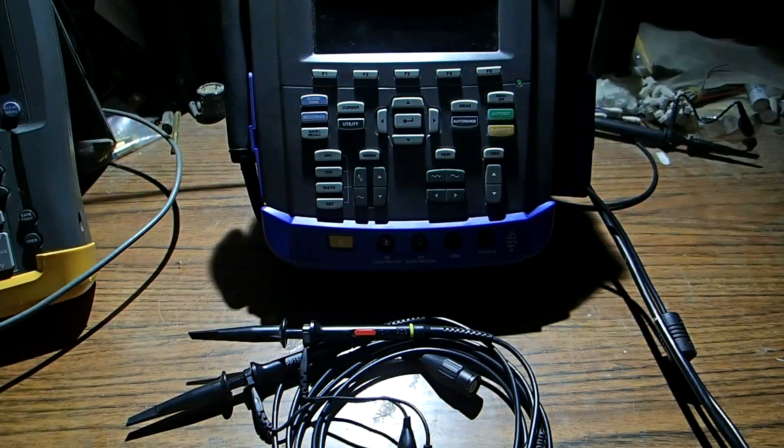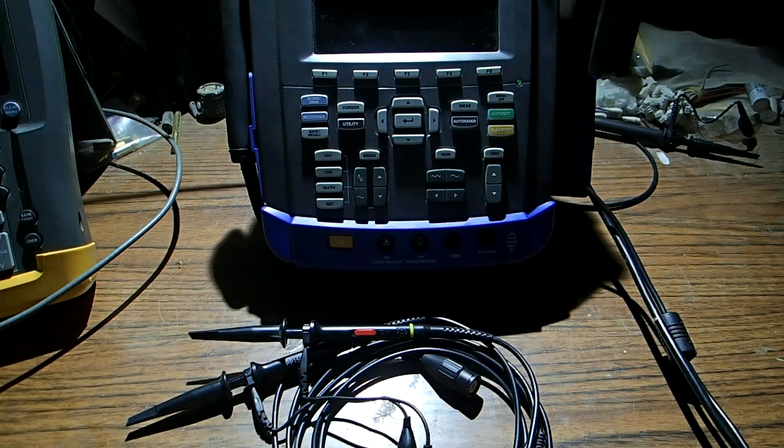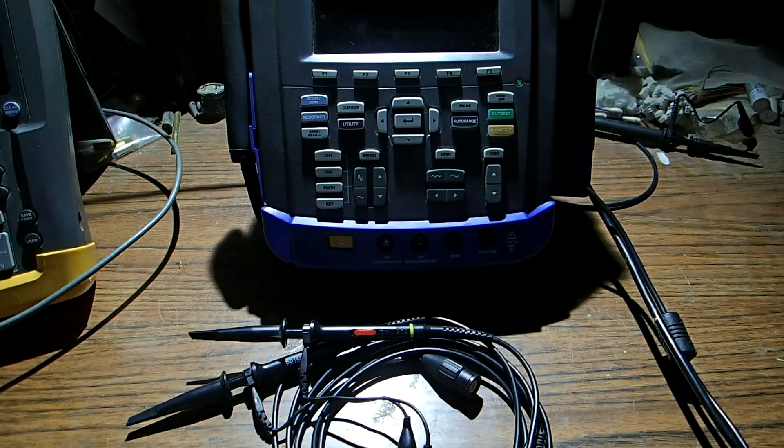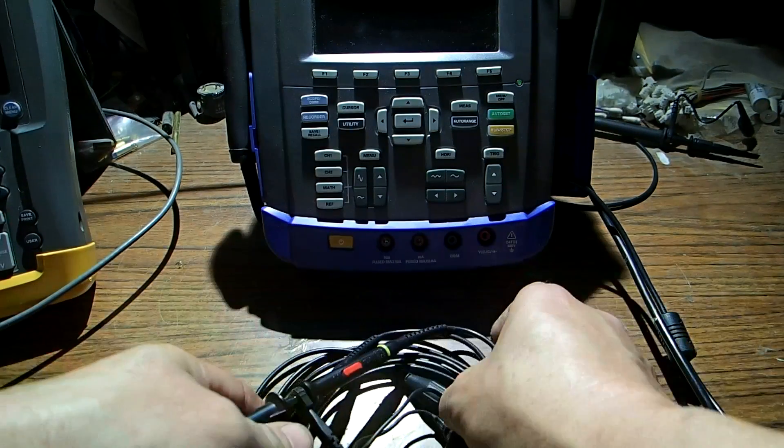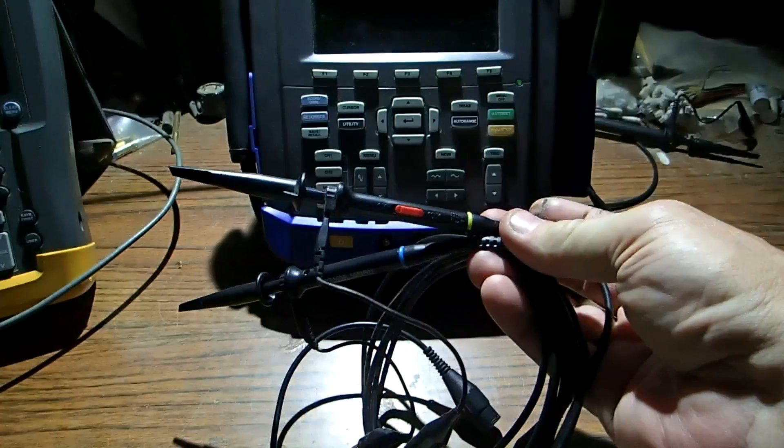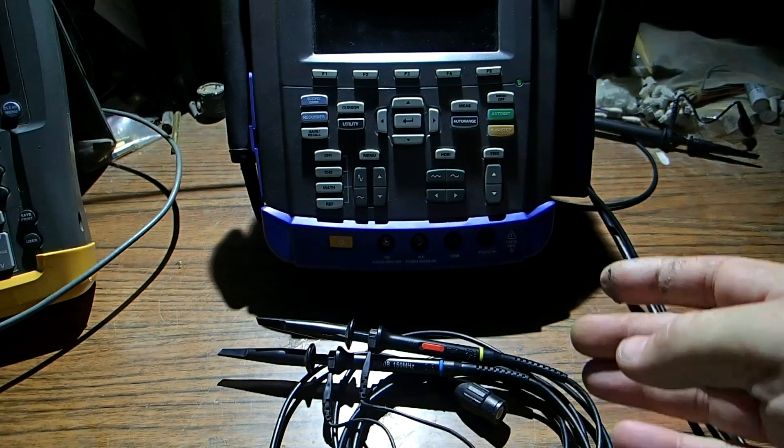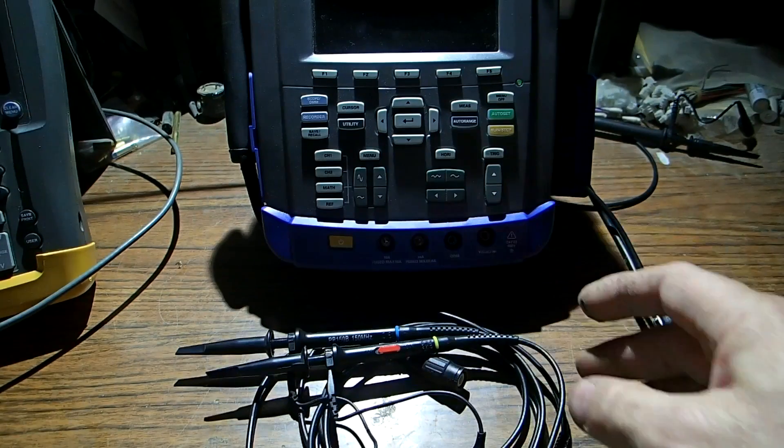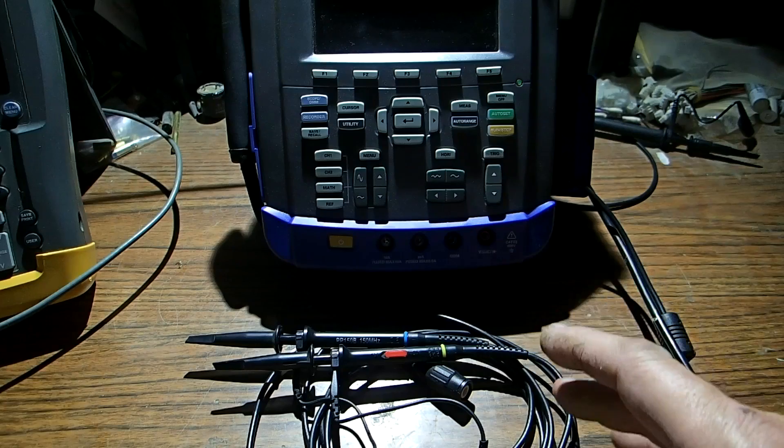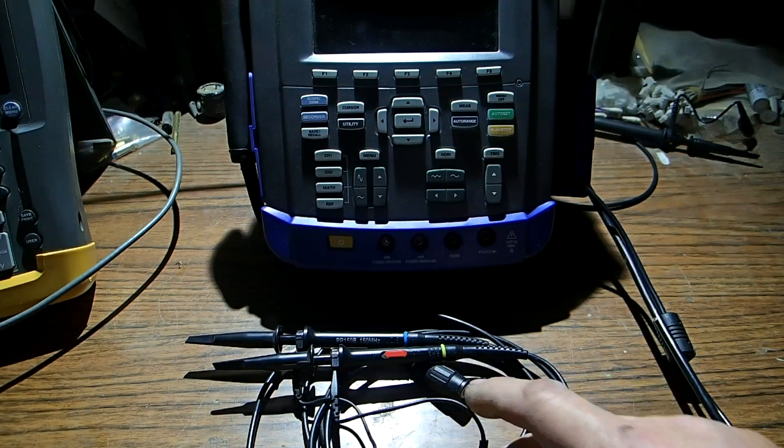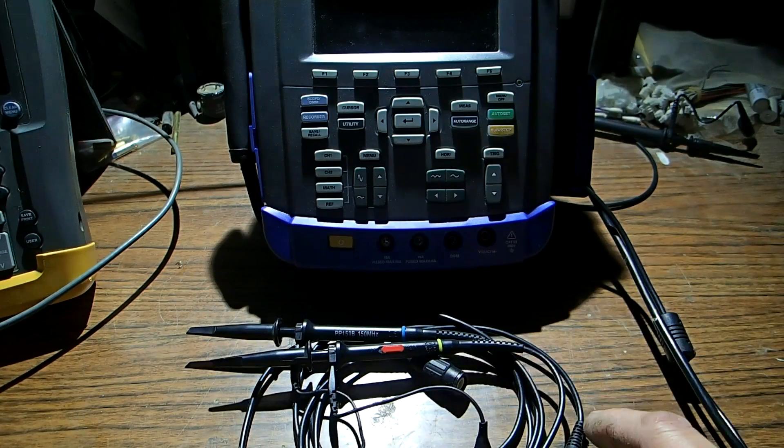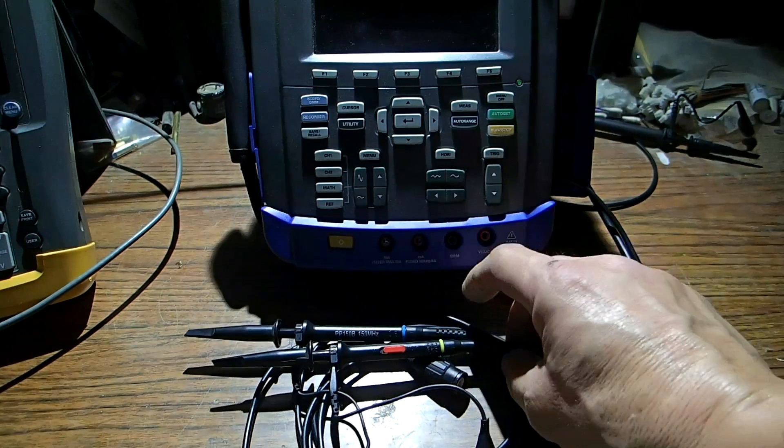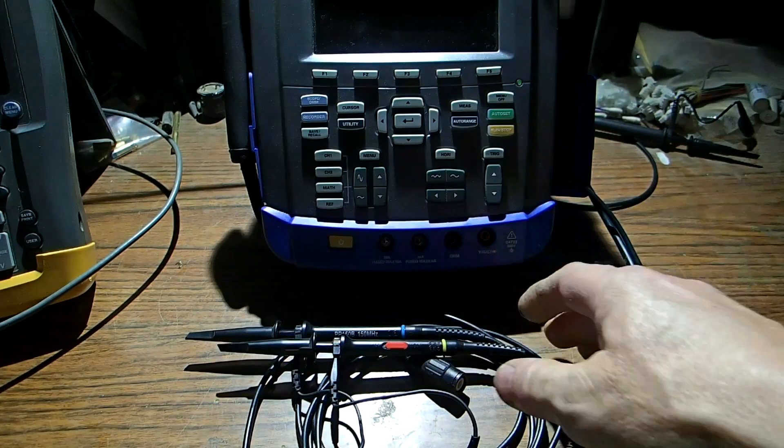Before I started the testing on the Hantec, I had to go through the equipment to make sure everything was operational. But I noticed that these scope probes that it came with, these are junk or the capacitors are broken and I got terrible readings. I got rounded off readings of square waveforms with these scope probes and it made this Hantec look like it was a piece of junk.